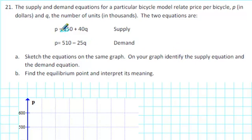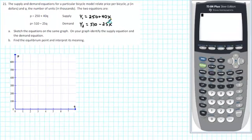In the calculator, instead of using P and Q, you'll need to use Y and X. So for the supply equation, we're going to enter Y1 equals 250 plus 40X. And for the demand equation, we'll enter Y2 equals 510 minus 25X. Once your calculator is on, go to Y equals.